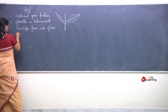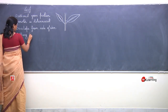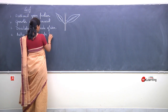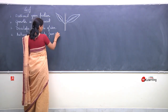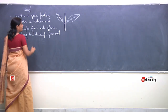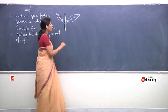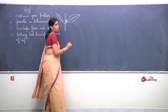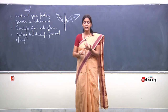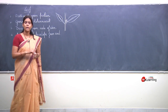Next point: axillary bud. A bud develops from the axil of the leaf — leaf aur stem ke beech ka ye jo angle hai, is angle ko axil kaha jayega. Aur is axil se jo outgrowth develop hoti hai, that bud is known as axillary bud. So nodal region se leaf ka development aur leaf axil se axillary bud ka production hota hai.